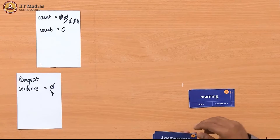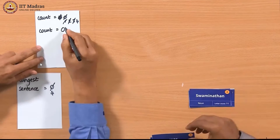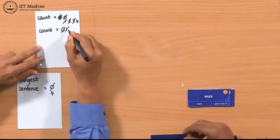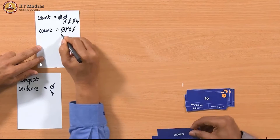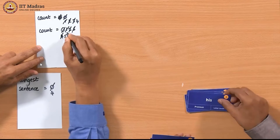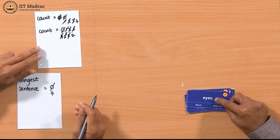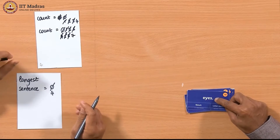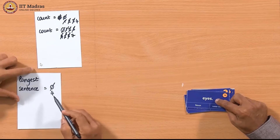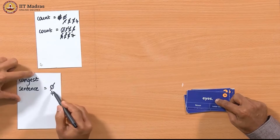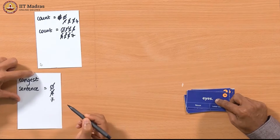Then for the next sentence, count is again re-initialized to 0. And card by card, we count the number of words in that sentence. As you can see, when count is now greater than longest_sentence, longest_sentence is updated to the current count value.